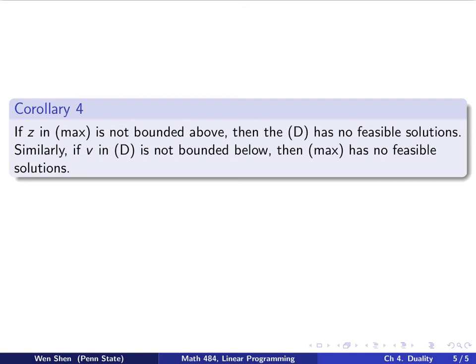One more corollary here, corollary number 4. The statement is: if z in the max problem is not bounded above, then the dual will have no feasible solutions. Similarly, if v in the dual is not bounded below, then the max problem has no feasible solutions. The proof is not too hard, and you can follow the similar line of thinking as corollary 3, so I will leave it as a homework problem. Give it a try and write out the proof.